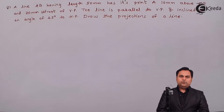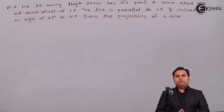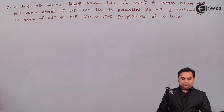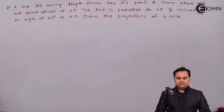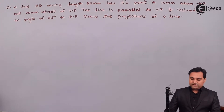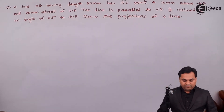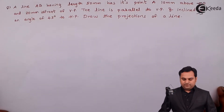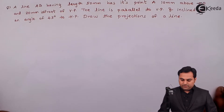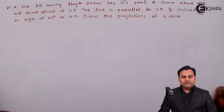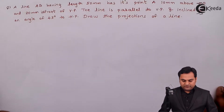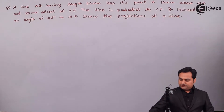Hello friends, in this video we will see a problem on projection of lines. A line AB having length 50 mm has its point A 10 mm above HP and 20 mm in front of VP. The line is parallel to VP and inclined at an angle of 45 degrees to HP. Draw the projections of the line. Here I'll write the data first.